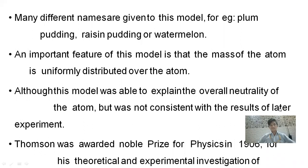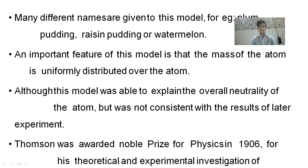Many different names are given to this model, for example plum pudding model, raisin pudding model, and watermelon model, based on the arrangement of the positive part and the electrons. An important feature of this model is that the mass of the atom is uniformly distributed over the atom. The positive part has mass, and it is uniformly distributed including the electrons embedded inside it — not concentrated at one corner.